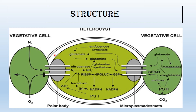An intermediate heterocyst has two polar nodules on both sides, while a terminal heterocyst has just one polar nodule. The heterocysts and akinetes have a much thicker wall than the vegetative cells.